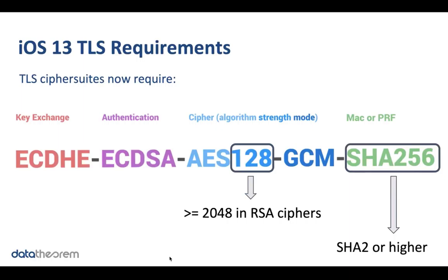With iOS 13, Apple is now requiring stronger cipher suites for TLS connections. If you make a network request in your app, there is now a minimum set of cryptography requirements for the connection. Specifically, if the TLS cipher suite uses an RSA cipher, it must offer at least 2048 bits of security, and the hashing algorithm must be SHA-2 or stronger — SHA-1 is now disallowed. With iOS 13, if you try to connect to a network that doesn't meet these requirements, the system will drop the request without connecting to the server. Be sure to upgrade your servers to meet these minimum requirements.